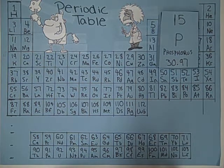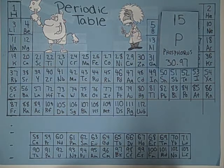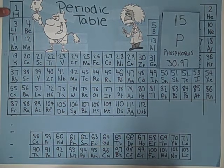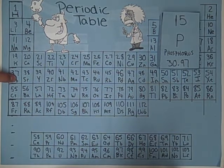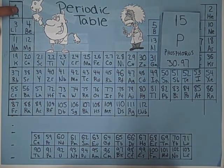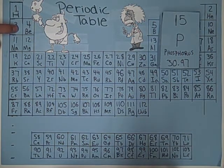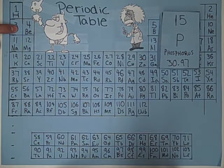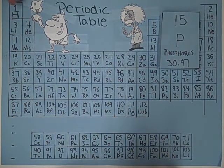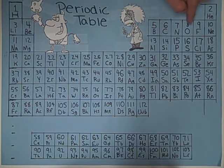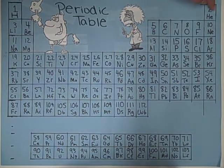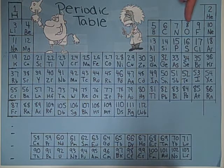The valence shell is determined by what period the element is in. This is the first period, second, third, fourth, fifth, sixth, seventh. If it is in the first, there will be one valence shell. If it is in the second, you will have two main shells, but the outer shell is the valence shell. The group number — first, second, third, fourth, fifth, sixth, seventh, and eighth — means there would be eight valence electrons, seven valence electrons, six, five, four, three, two, and one respectively.